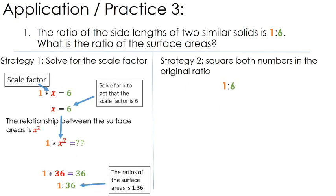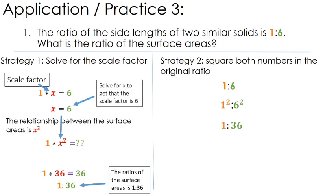Here's another strategy — it's easier mathematically, though I'm not as crazy about it because you can do it without really understanding what's going on. You can take the original 1 to 6 ratio and, since we're looking at surface areas rather than side lengths, square each of these numbers to get the ratio for the surface areas. Squaring gives you a 1 to 36 ratio — the same answer we got using the other strategy. It doesn't matter which one you use; they both give us the right answer.